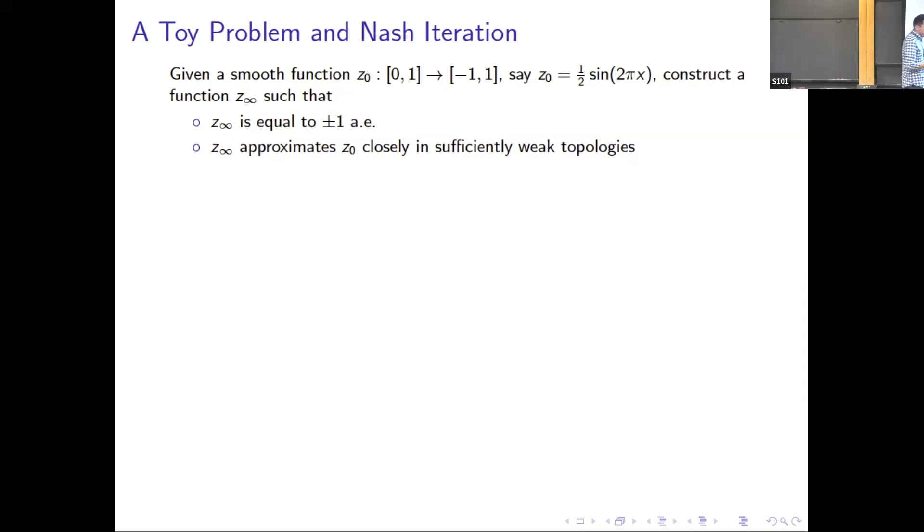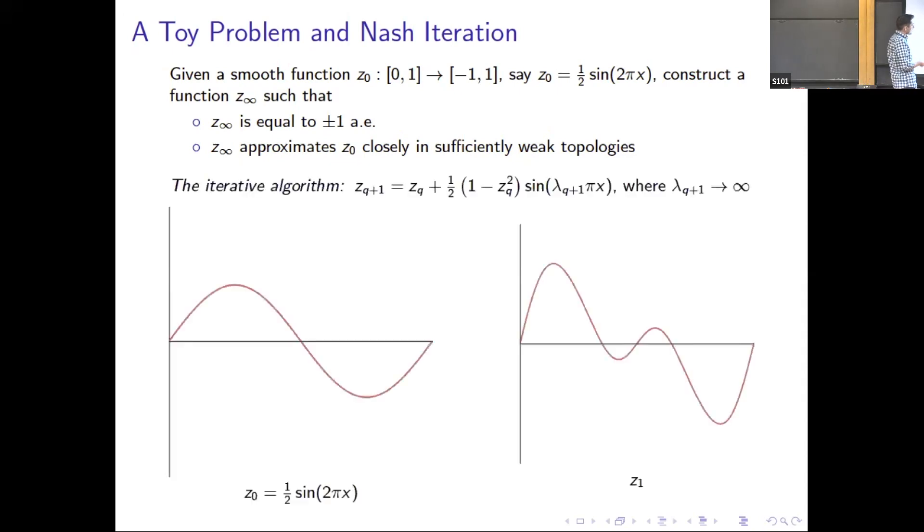There's an algorithm for producing such a function z_∞. The idea is basically you take your previous iterate and then you add to it some measurement of the error. One minus z_q squared is how far I am away from satisfying the first constraint, and I have this high frequency object multiplying it. That basic idea is really what a Nash iteration is, and it's at the heart of the construction that we use to produce solutions to the Euler equations.